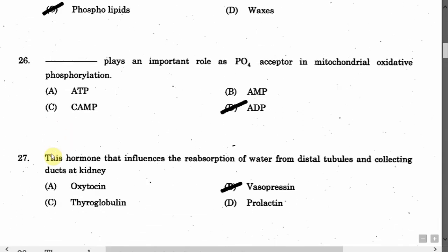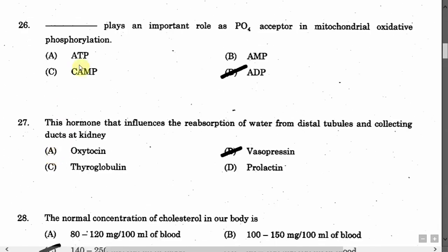The next question is: What plays an important role as PO4 acceptor in mitochondrial oxidative phosphorylation? Option A: ATP. Option B: AMP. Option C: cAMP. Option D: ADP. The correct answer is Option D, that is ADP.